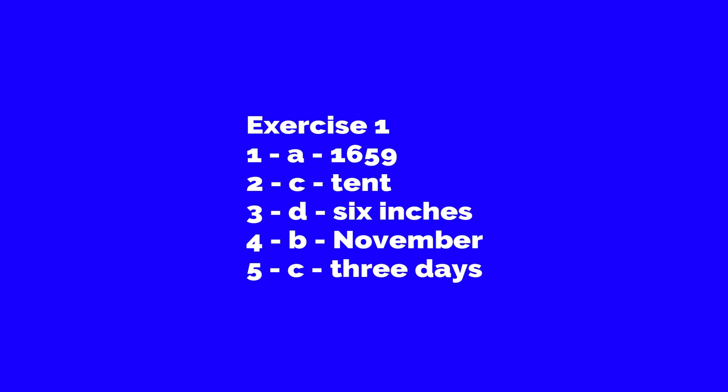Second: Robinson Crusoe used canvas to make — a) a bed, b) sail, c) tent, or d) curtain. Answer is c) tent. Third: The distance between the stakes Robinson Crusoe drove into the ground was — a) five inches, b) seven inches, c) four inches, or d) six inches. Answer is d) six inches.